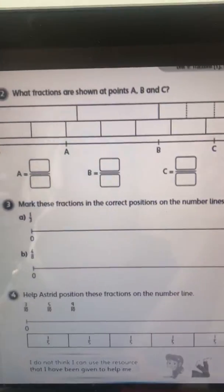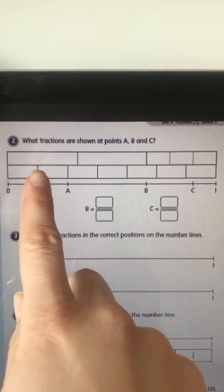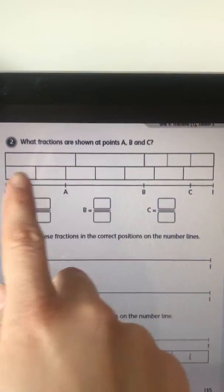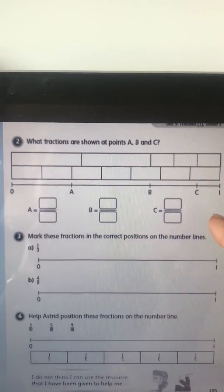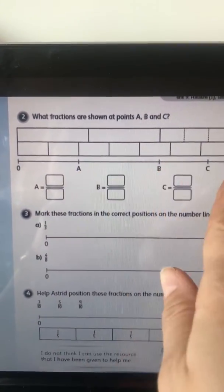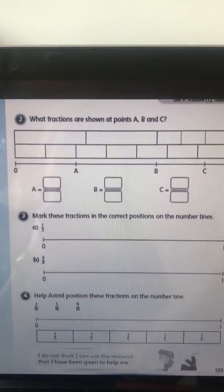Okay, and then it gets slightly harder here because it hasn't told you, it hasn't put the numbers in, so you're going to have to count and think about what it's worth. Okay, and you're, again, you've got A, B, and C. What fractions are they for?